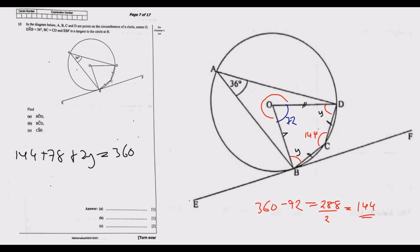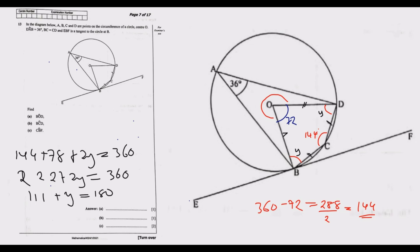Calculators are not allowed, so simplify carefully. 144 plus 72 equals 216, so 216 plus 2y equals 360. Dividing through by 2 gives 108 plus y equals 180, so y equals 180 minus 111... y equals 69 degrees. So both base angles are 69 degrees.